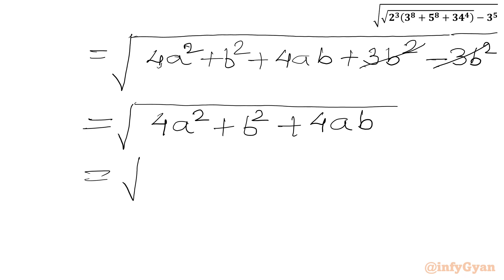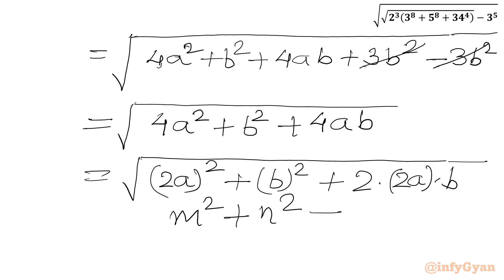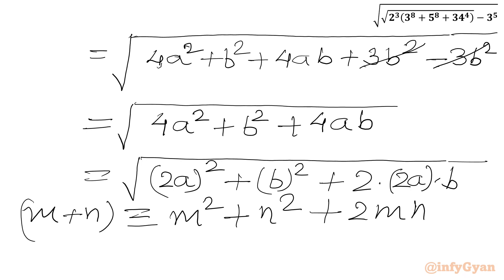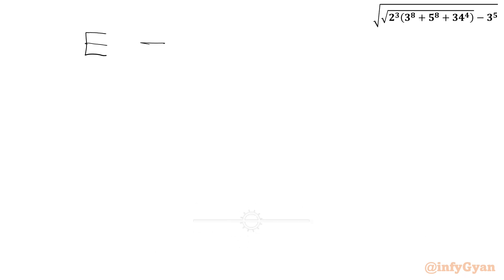We get the square root of 4a² + b² + 4ab. I can write 4a² as (2a)², b² as b², and 4ab as 2 times 2a times b. This matches the identity m² + n² + 2mn = (m+n)², so the expression becomes the square root of (2a + b)². We cancel the square root with the square to get 2a + b.